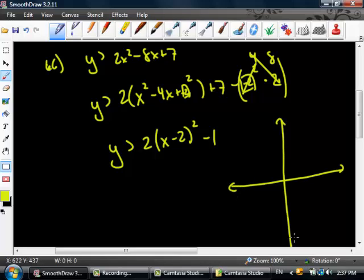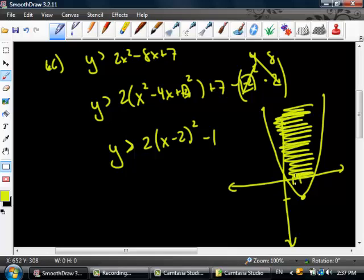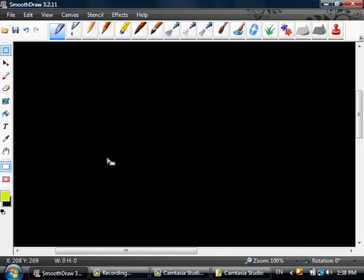So what I end up with is y is greater than 2 parentheses x minus 2 squared. This is 4 times 2 which is 8. 7 minus 8 is negative 1. My vertex is at 2, negative 1. This is an upward facing parabola. Now I need to find shading. This is y is greater than. So am I shading above the vertex or below the vertex? Comrade! Above the vertex. Now what's wrong with my parabola? Brother. It's not dashed. So we've got to dash this thing.